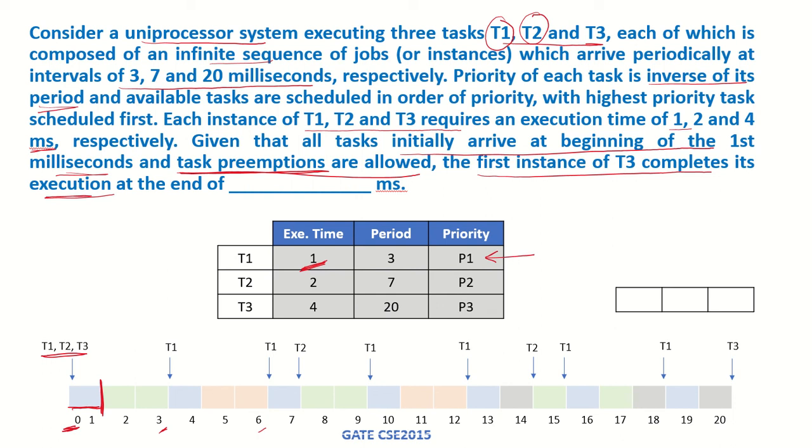At time unit 1, T2 is the next task in the queue. So T2 will start running and it has an execution time of 2, so it will run from 1 to 3. Now till this time, T3 was already there in the queue.